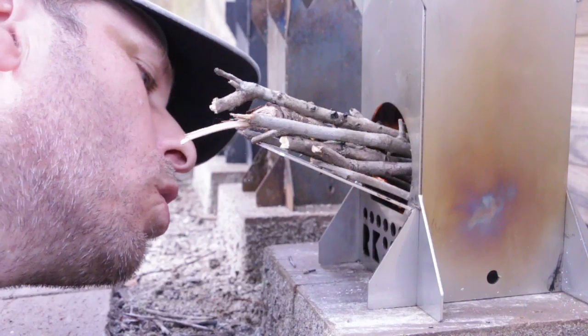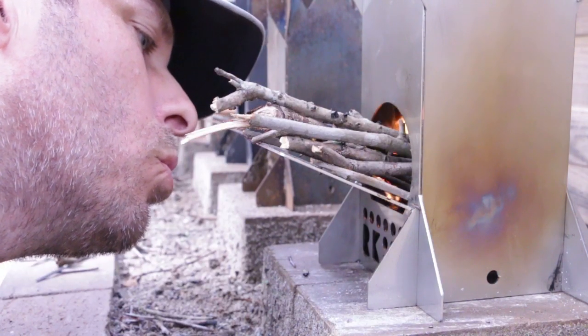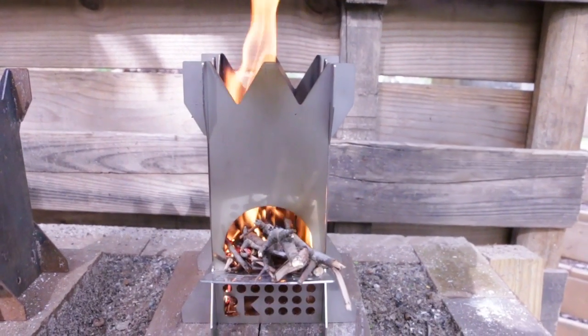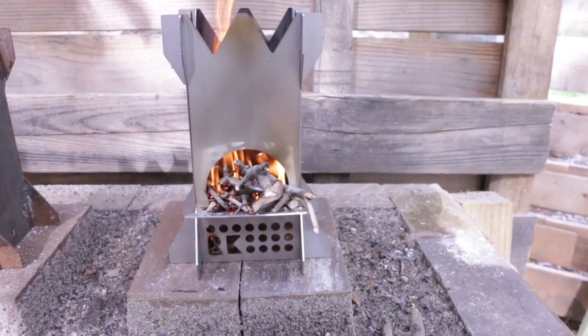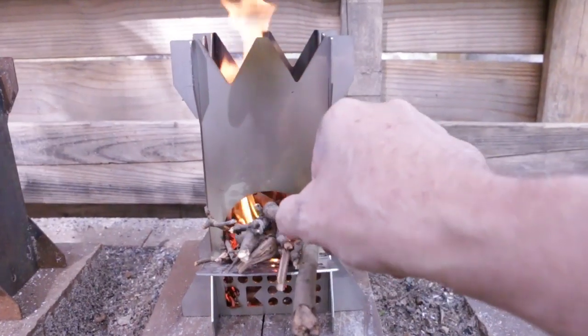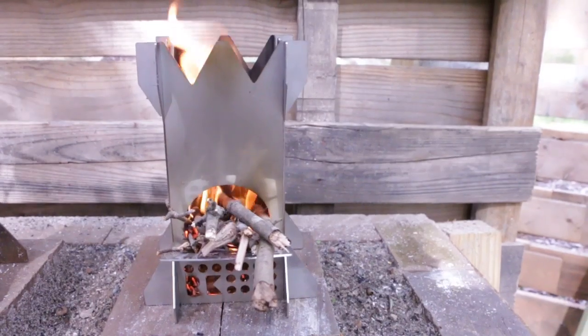A little blowing can help to get the airflow going. And now we got the flames going. We'll just continue to feed that fire as it gets bigger and burns down. All right, that's just how easy it is to light the Rocket King.